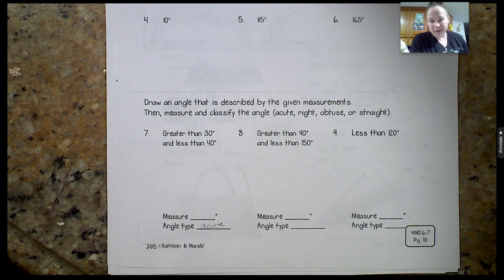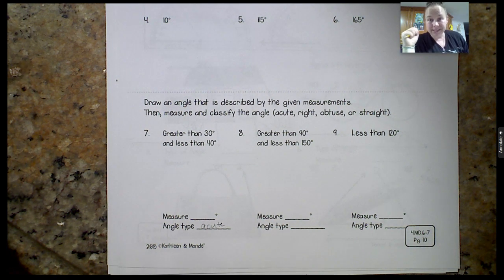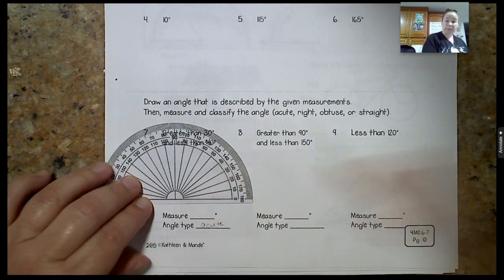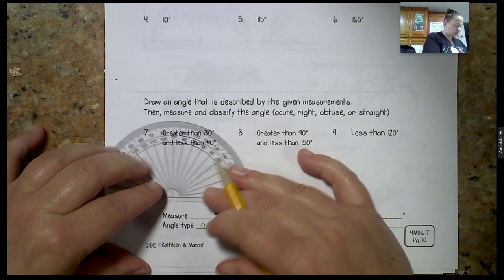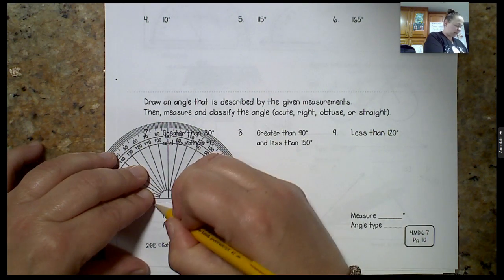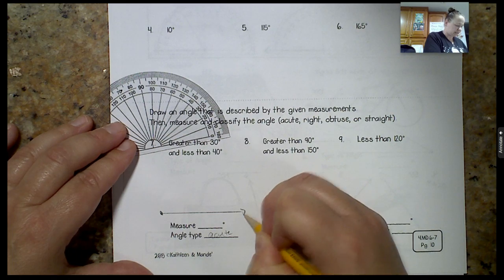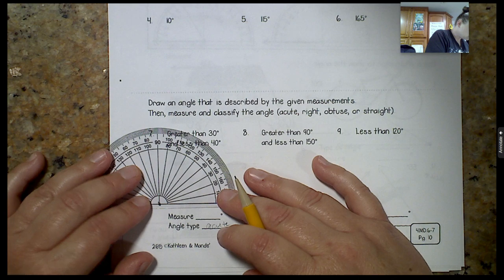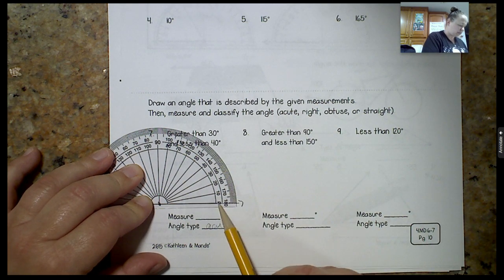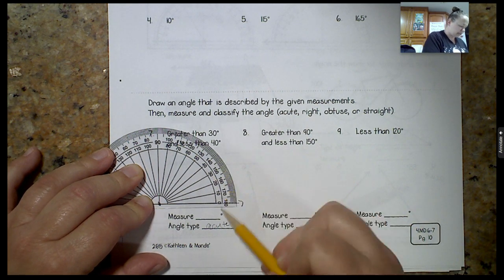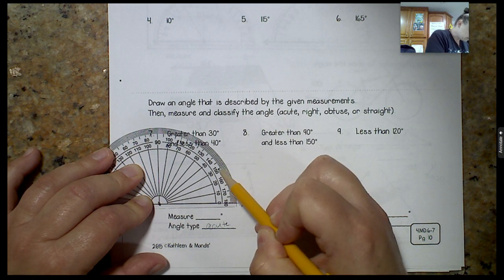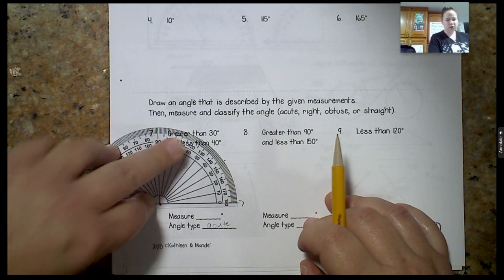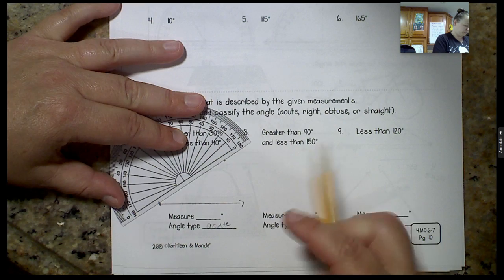Let's just pick a number, greater than 30 and less than 40. I'm going to pick 33 because that was my high school basketball number. Maybe you want to draw 37 or 32. I'm going to draw my base ray. There's my vertex. Make it a ray. Now I'm going to line up my protractor. 33, I picked a hard one. There's 30. I need to come up here and go 1, 2, 3. There's 33. Turn it, connect the dots.